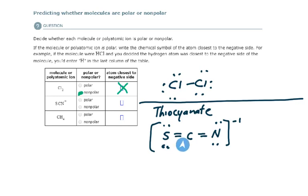So let's look at this. What is its AX notation? This is going to be AX2 — there are no lone pairs. So its electron domain and molecular geometry is linear.